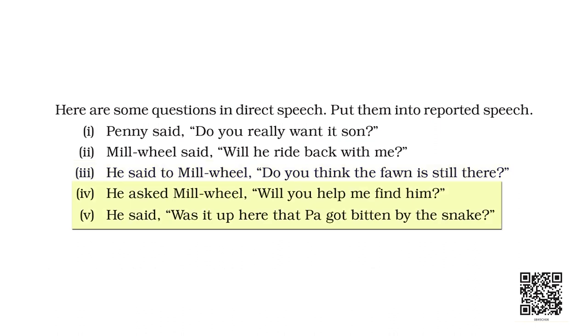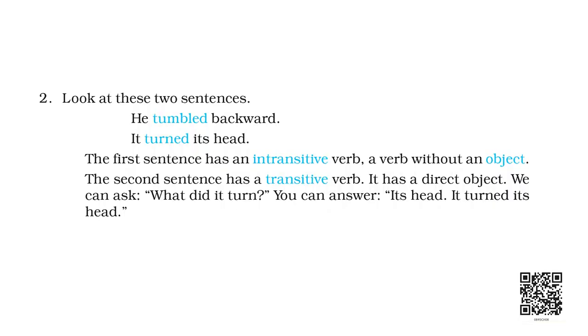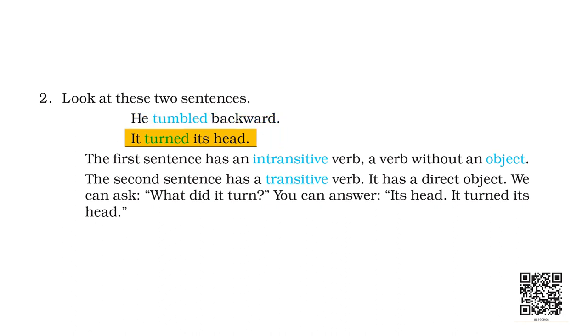Will you try the next two sentences as homework later? Now let's try question number two. Look at the sentences given there: 'He tumbled backward' and 'It turned its head.' Can you find the difference between these two sentences? Let us ask a question to the verb in the second sentence.